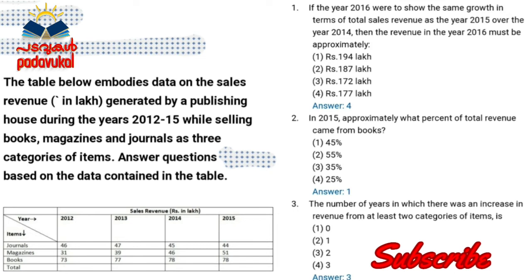In 2014 compared to 2013: journals are 47 and 45 — decreased. Magazines are 39 and 46 — increased. Books are 77 and 78 — increased. So 2 out of 3 categories increased in 2014, satisfying the condition. In 2015: journals are 45 and 55 — increased, and books are 78 and 78. So the answer is 2013 and 2014.